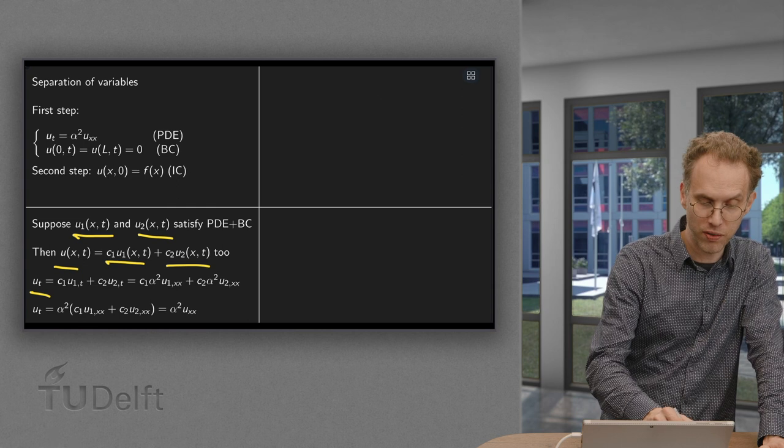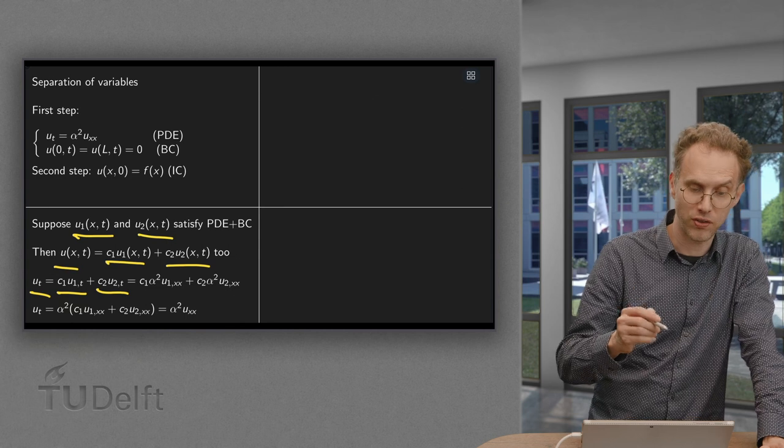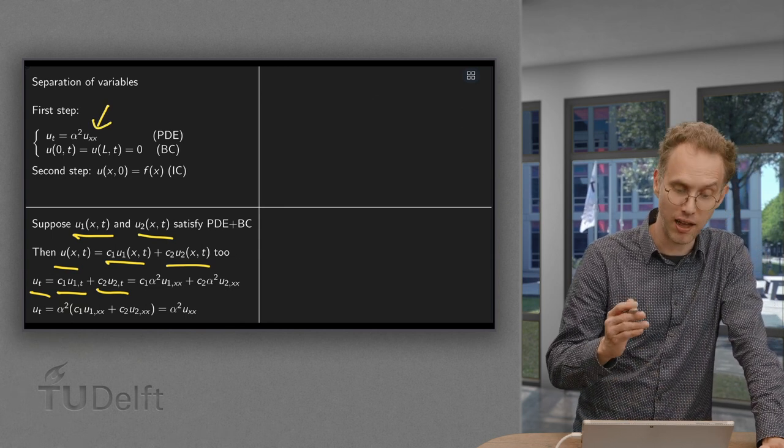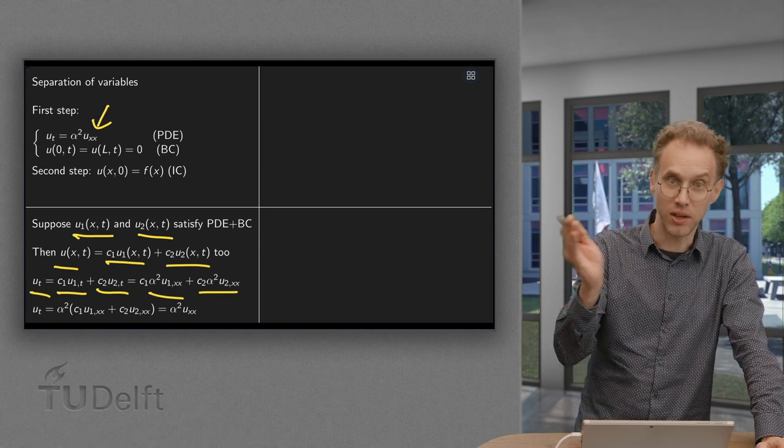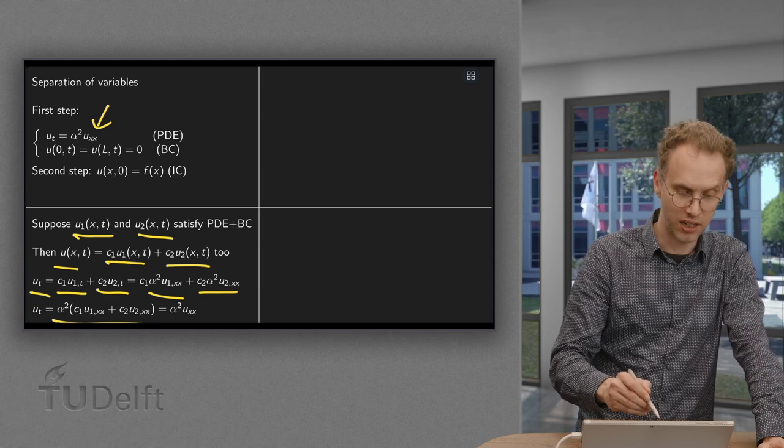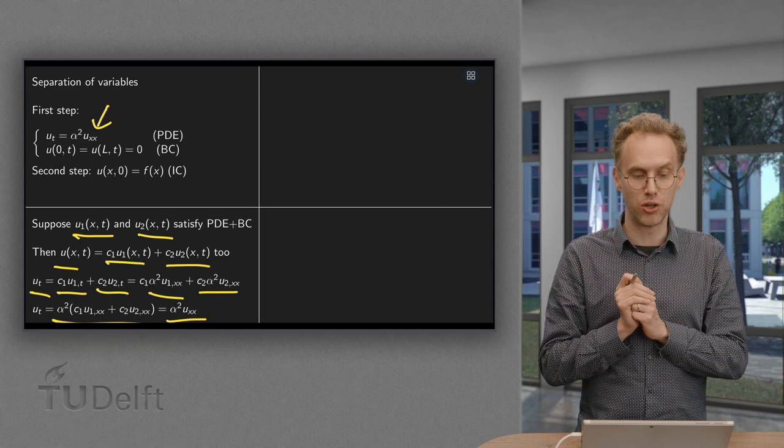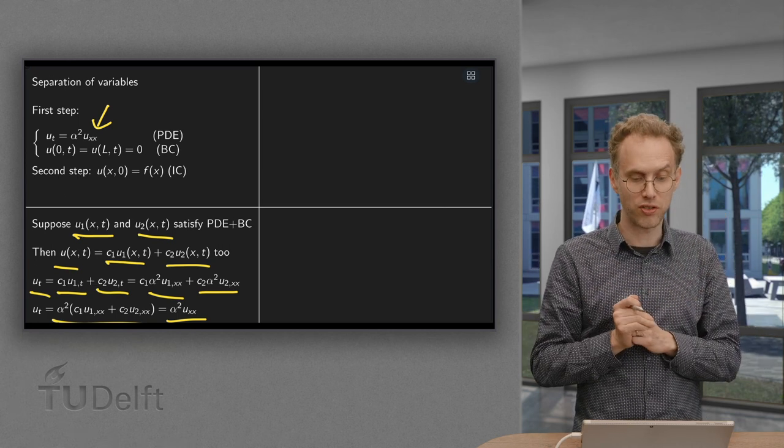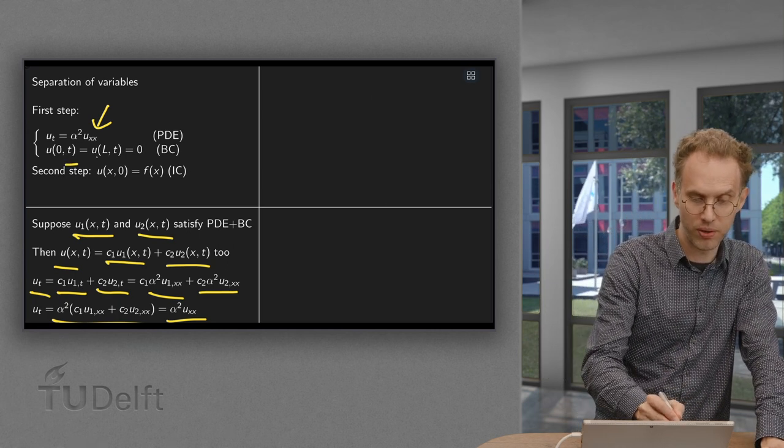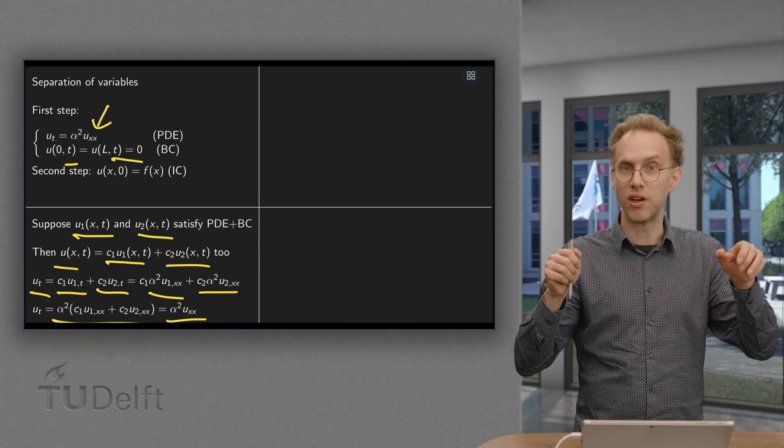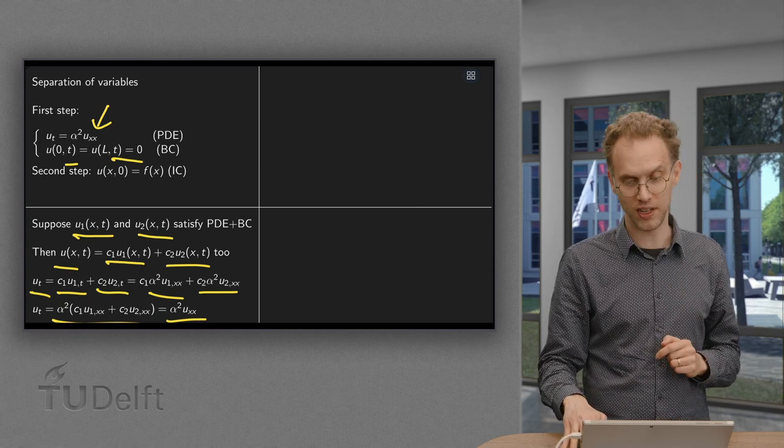Well, UT equals C1U1T plus C2U2T. U1 and U2 both satisfy the PDE. So for both of them you have alpha squared times U1XX and for the other one alpha squared times U2XX. You can take the alpha squared out and you see that UT equals alpha squared times UXX. So if you have two solutions, then a linear combination also satisfies the PDE. And for the boundary condition it is clear because they are zero on X equals zero and X equals L. So if you take a linear combination you are still at zero at the boundaries.